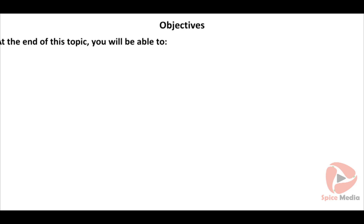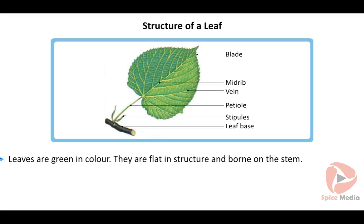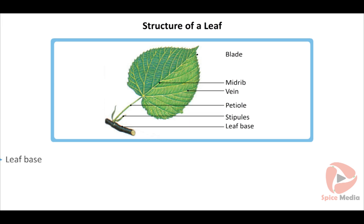At the end of this topic, you will be able to draw the parts of a leaf and list the functions of a leaf. Leaves are green in colour and are flattened structures borne on the stem. A leaf has three main parts: leaf base, petiole, and leaf blade, which is otherwise known as the lamina.